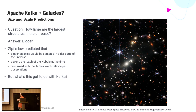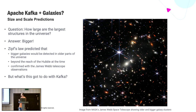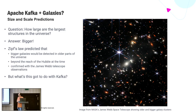Galaxies come in different sizes, from relatively small up to enormous. Zipf's Law predicted that bigger galaxies would be detected in older parts of the universe. But at the time, we only had the Hubble telescope, which wasn't powerful enough to look back further in time. When the James Webb telescope came online, sure enough, they found all these bigger galaxies that Zipf's Law had actually predicted.